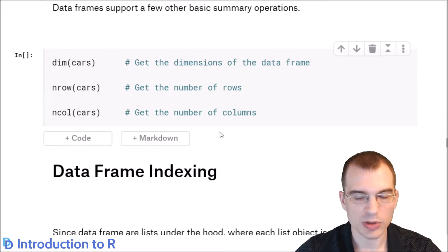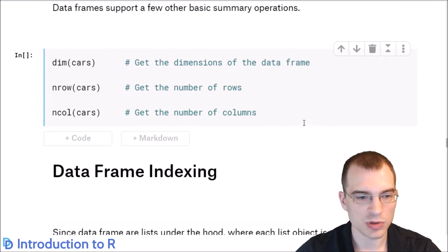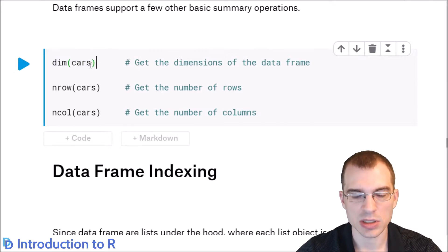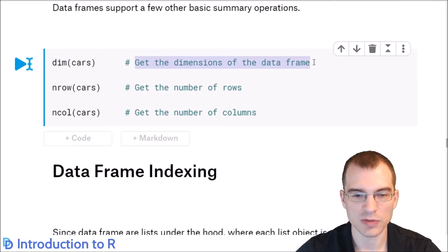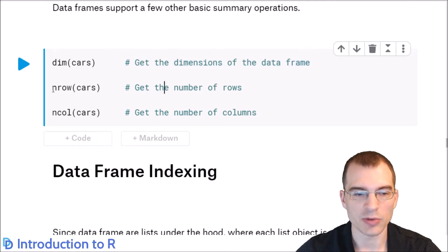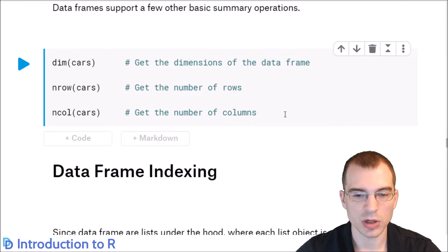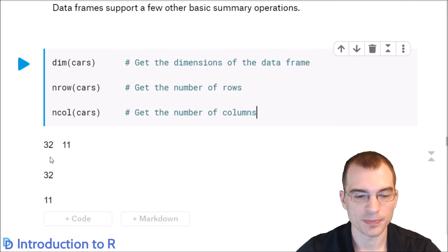Some other useful functions: dim, which we learned for matrices, works on data frames as well and checks the dimensions. nrow gives you the number of rows, and ncol gives you the number of columns.